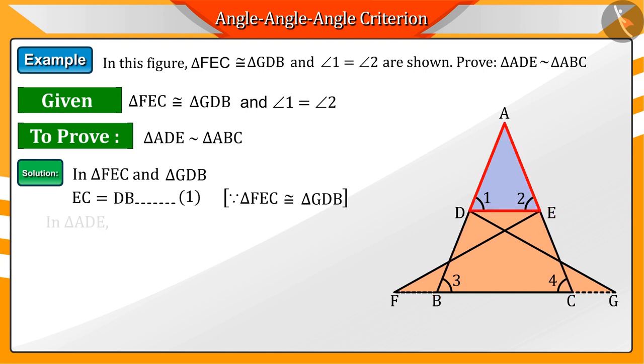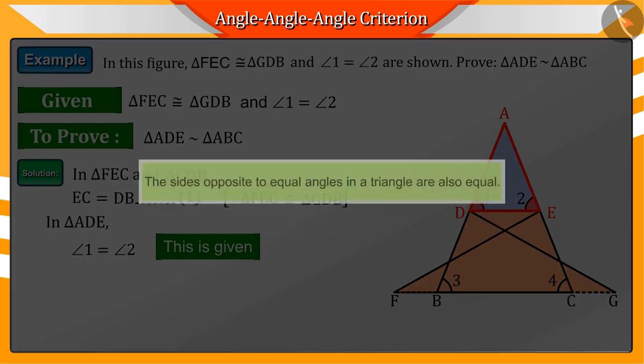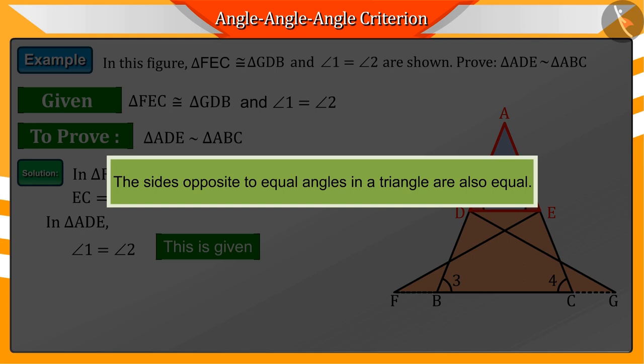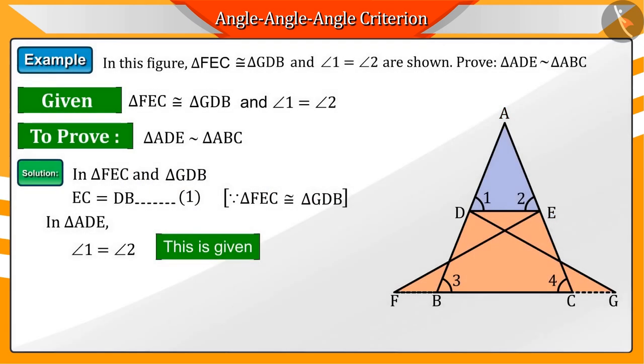Now if we look at the triangle ADE, we get to know that angles 1 and 2 are the same. You would remember that the sides opposite to the equal angles in a triangle are also equal. Hence, sides AD and AE would be equal.